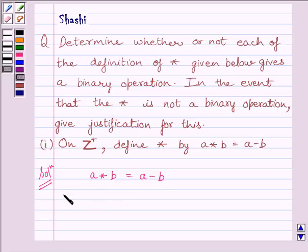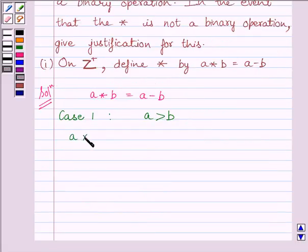Now, here two cases are possible. Let us take case 1, where A is greater than B. When A is greater than B, then A star B is equal to A minus B. Now, A star B is equal to A minus B would be a positive integer. We can say, A minus B would be greater than 0. This implies A minus B belongs to the set of positive integers.